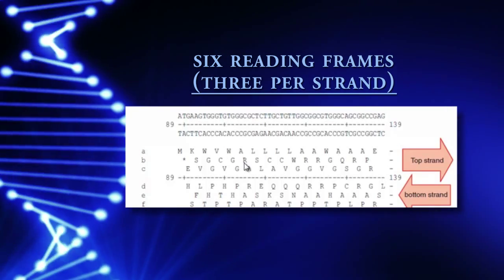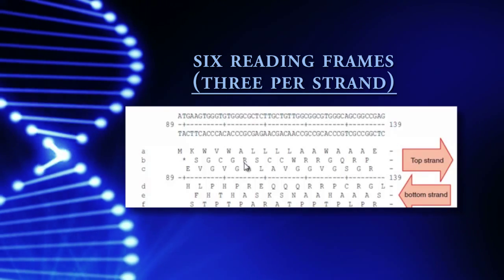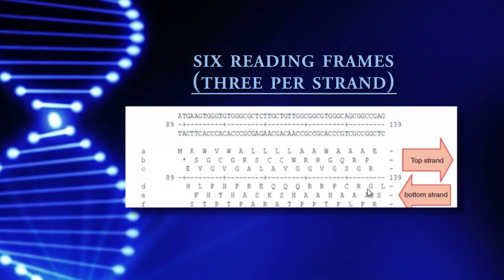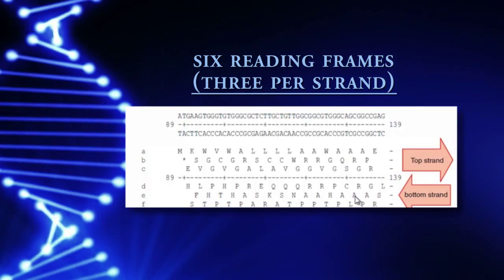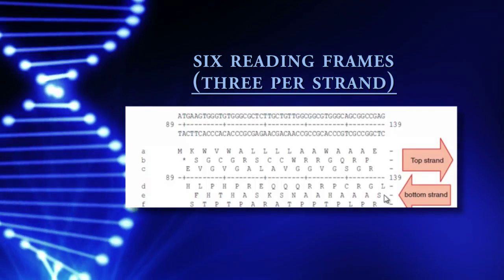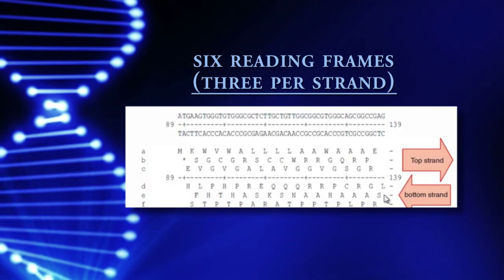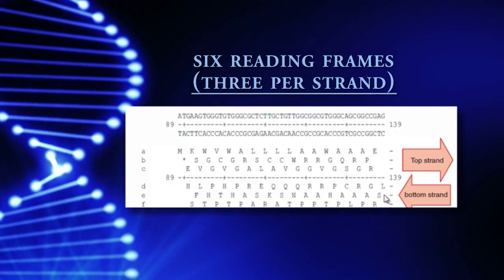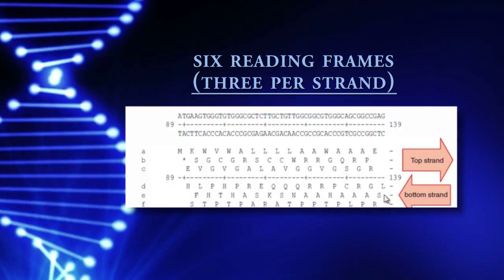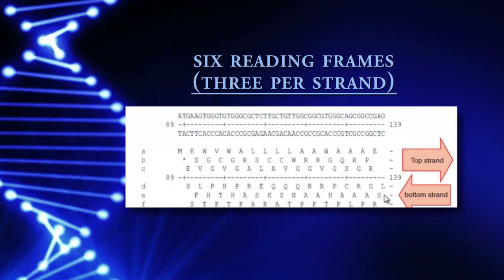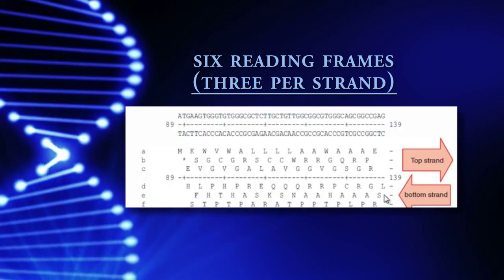Now on the bottom strand, reading right to left: strand D would give L, G, R, C, S, A, and line E gives A, A. There are six different places to start a reading frame. An open reading frame is defined as a start codon followed by a stop codon in the same reading frame, meaning you could have a potential coding region there.